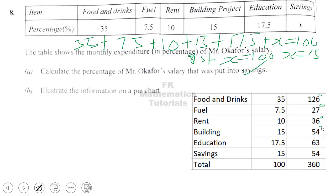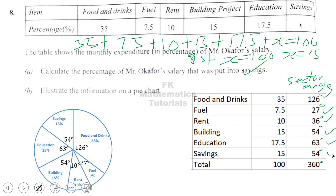To construct the pie chart, we need to calculate the sectoral angle for each sector. To find each angle, multiply the percentage by 360°. For example, 35% of 360° = 126°, and 7.5% of 360° = 27°, giving angles of 36°, 54°, 63°, and so on. After calculating all the angles, we can construct the pie chart, which should look like this.